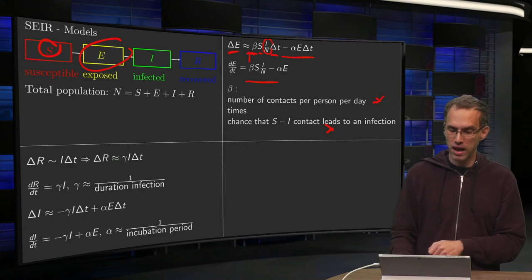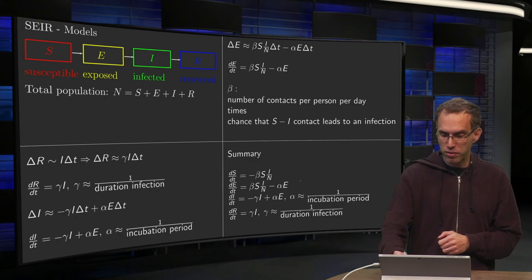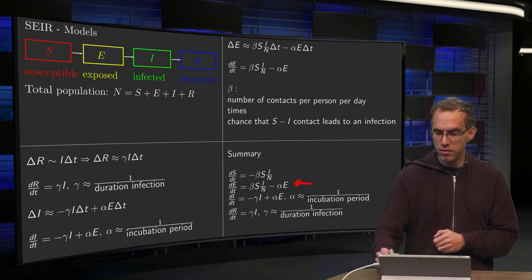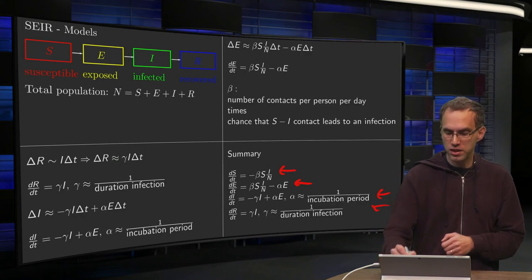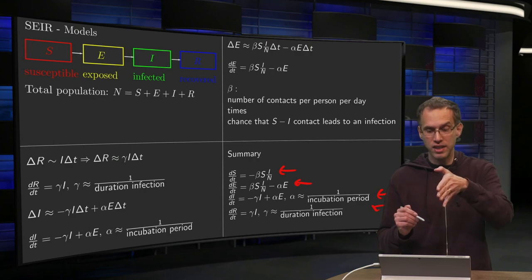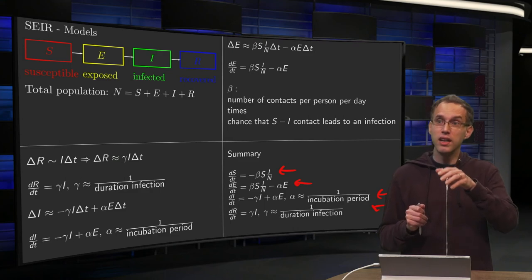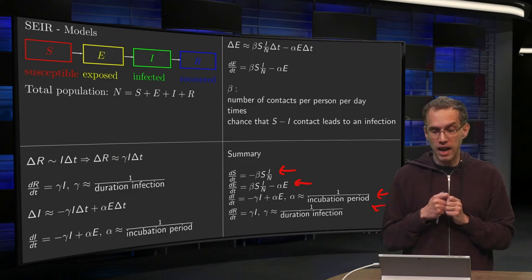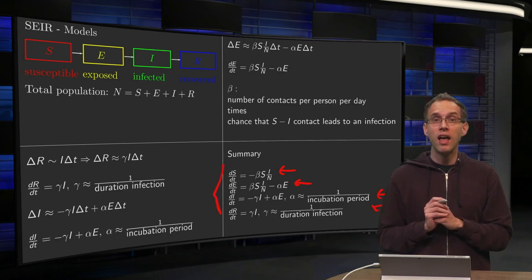So to summarize, here we have our differential equations. We have our equation for dE/dt, dI/dt and dR/dt already. Of course you can form dS/dt: what is entering the group E is what is leaving the group S. So there you have your system of differential equations, ordinary differential equations. So no problems there.